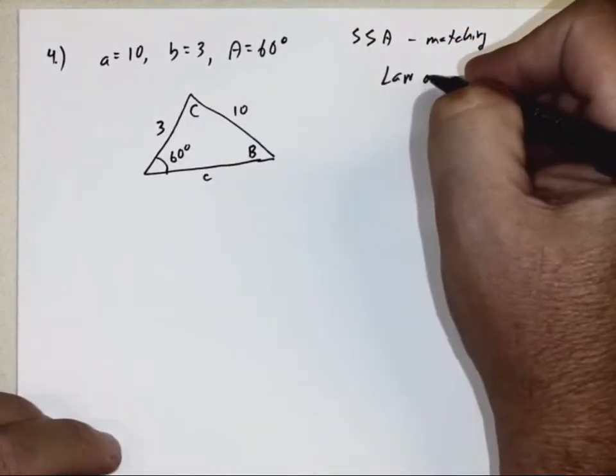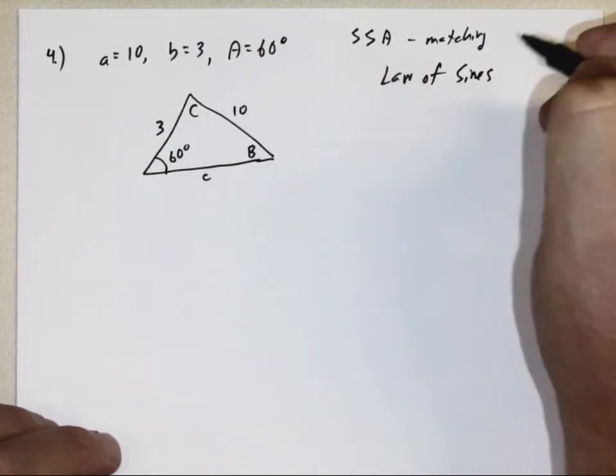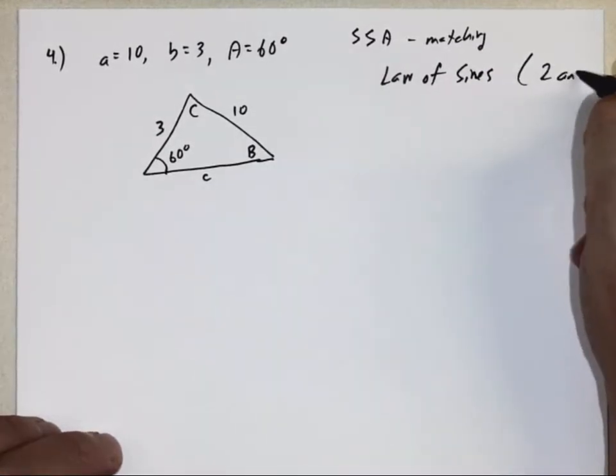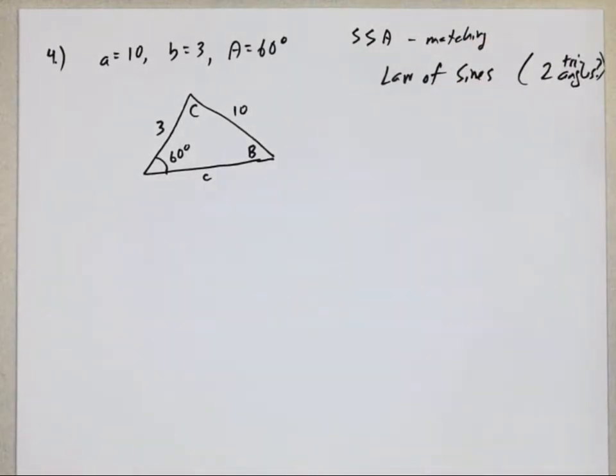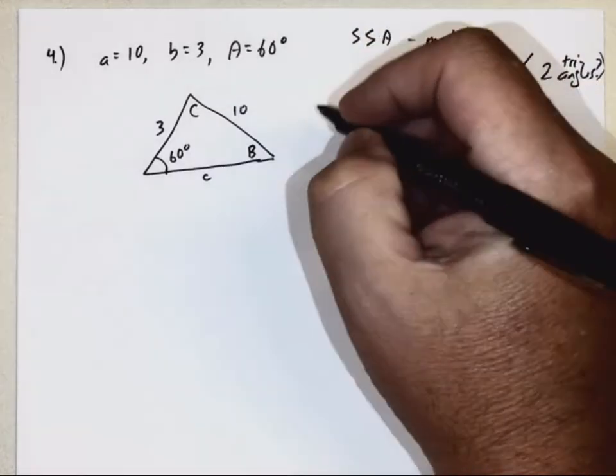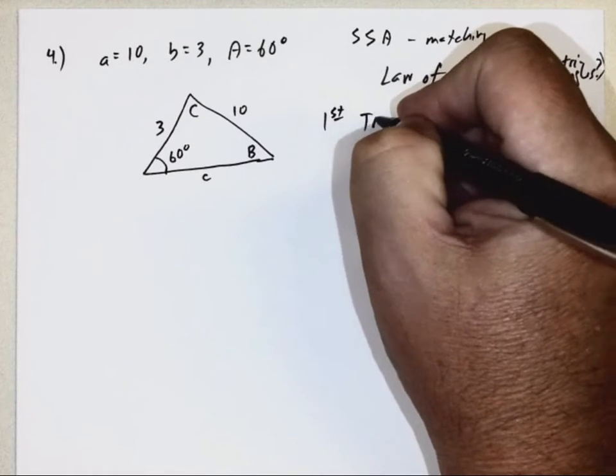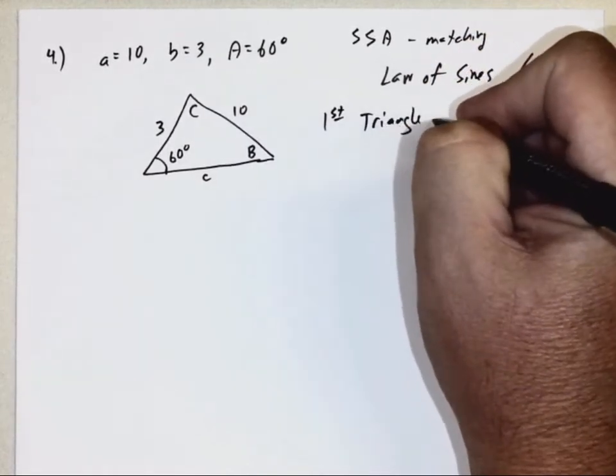So when you do this, we're going to use the law of sines, but the possibility exists for two, I should have said, triangles. This is the case where you might have, actually, just like the question says, the question certainly gives you a clue. You can have no triangles, one triangle, or two triangles. So the first thing you do is you solve for the first triangle, and if you get a triangle, then you go see if there's a second triangle. So, first triangle.